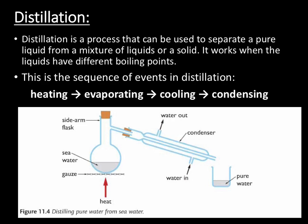Distillation overall, be it simple or fractional, works in this order: we heat our liquids, evaporating one of them, which will then be cooled and made to condense, so we can separate out our two liquids. For example, we can distil pure water from salt water — the salt would remain in the flask while pure water is distilled off. We can also distil pure water and ethanol; ethanol has a lower boiling point so it will evaporate first, and pure water would be left in our original round-bottom flask.